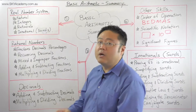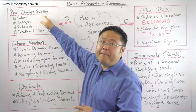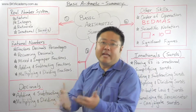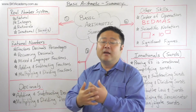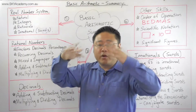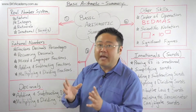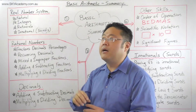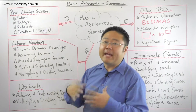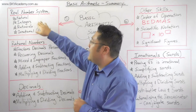The first thing we covered was the real number system. A number system is really just a pool or a set of numbers that we work within. We looked at all the different number systems within the real number system — all the little subsets.